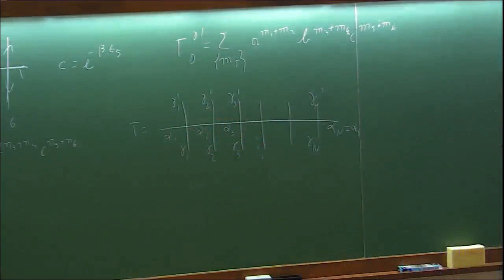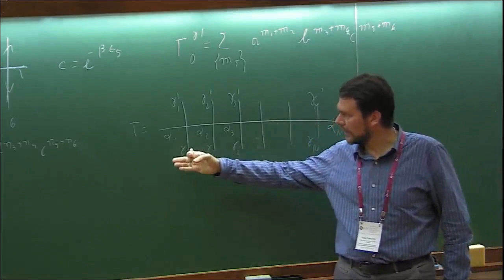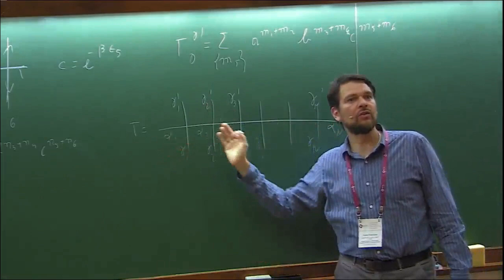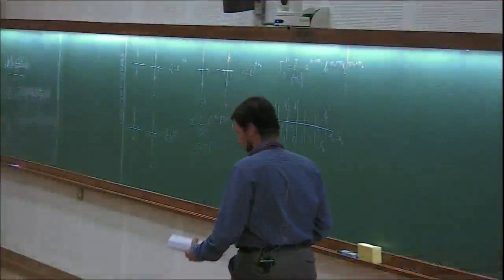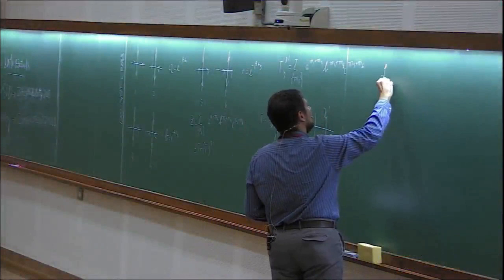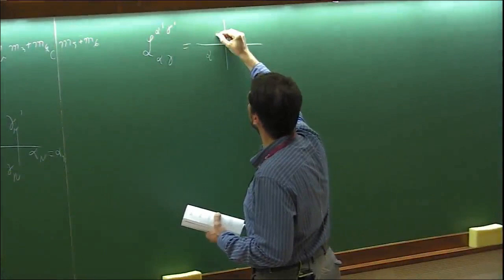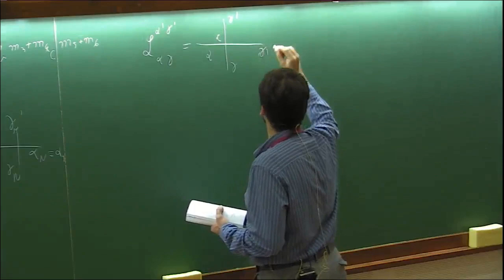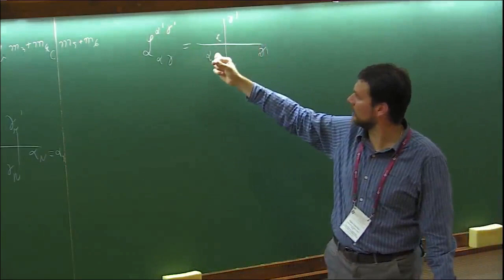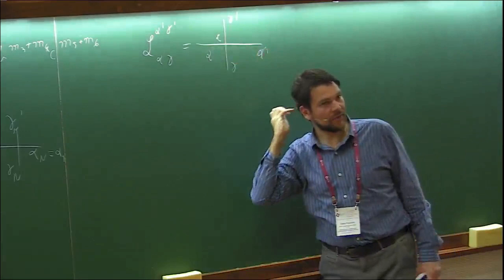This does not have a natural interpretation as a transmission because there is not a one-to-one correspondence between these states, but you can still think of it as a process with which you can construct the transfer matrix. So we introduce the L operator, which has four indices and represents the vertex — it tells you, given a configuration of arrows on the horizontal and vertical direction, what is the weight.